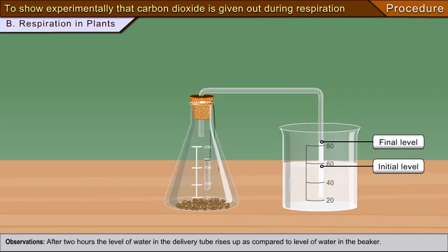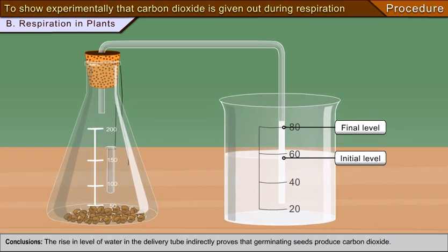Observations: After two hours, the level of water in the delivery tube rises up as compared to the level of water in the beaker. Conclusions: The rise in level of water in the delivery tube indirectly proves that germinating seeds produce carbon dioxide.